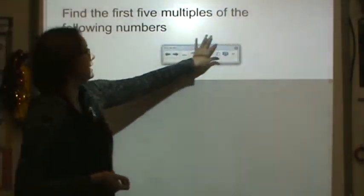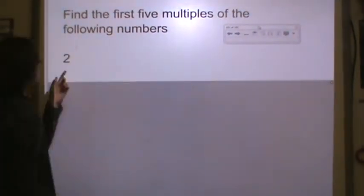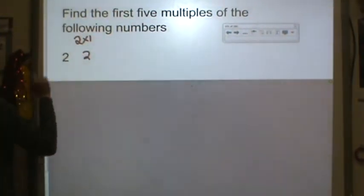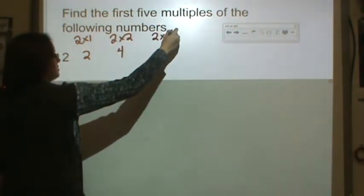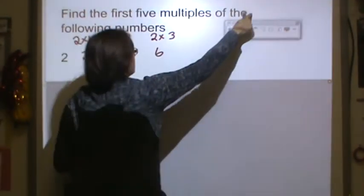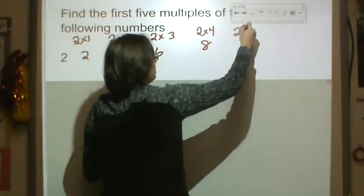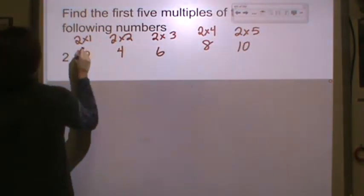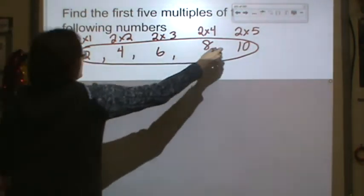So here we're going to find the first five multiples of the following numbers. The first multiple of 2 would be 2 times 1, which would be 2. Next, 2 times 2 would be 4. 2 times 3 would be 6. 2 times 4 would be 8. And 2 times 5 would be 10. So the first five multiples of 2 are 2, 4, 6, 8, and 10.